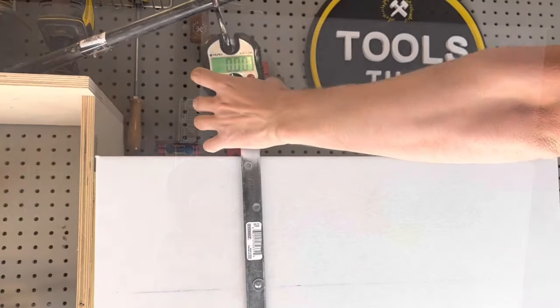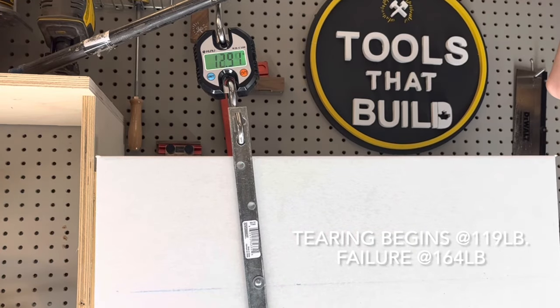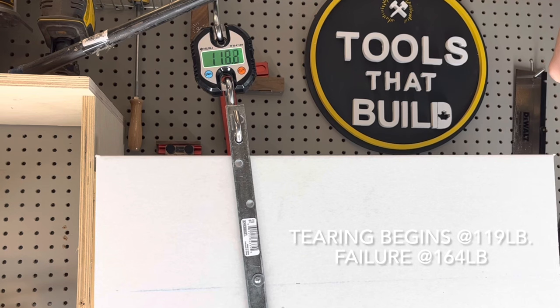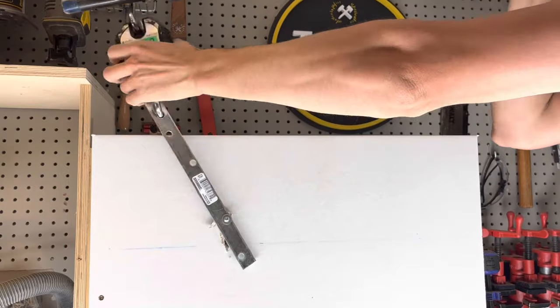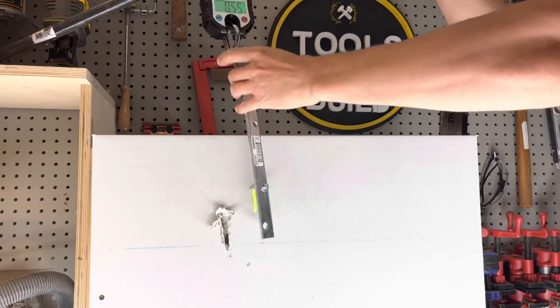After attaching the test bracket using the included screws, we'll test the anchor. This anchor is rated for 90 pounds, which it surpassed, beginning to fail at 119 pounds and finally failing at 164 pounds.